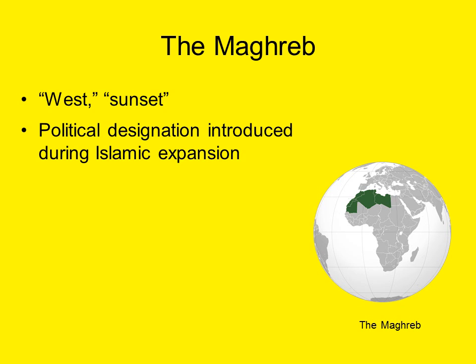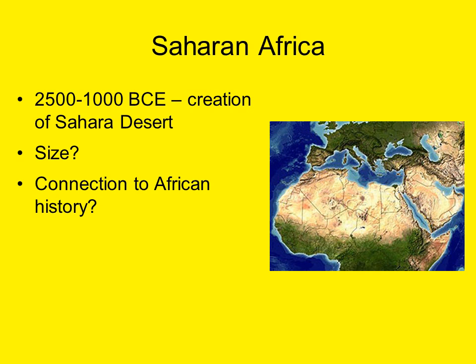The Maghreb is primarily a political term to describe a region, and we're not going to discuss specific climatological associations here because they do vary. In the modern world this would be the countries of Morocco, Algeria, Tunisia, Libya, and Mauritania, plus the territory of Western Sahara. The Sahara itself, as most of you know, is a desert — it's the Arabic word for desert.